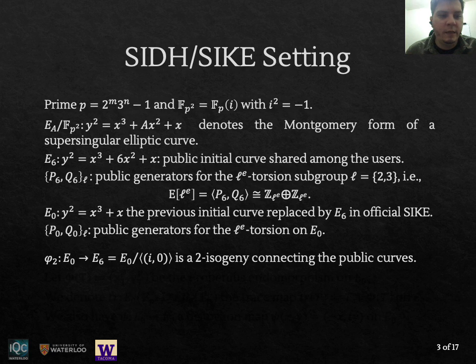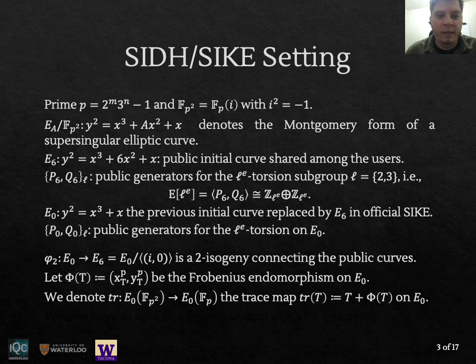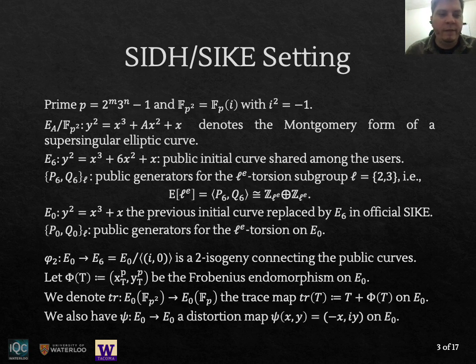We know that the curve E0 is connected to the curve E6 via a 2-isogeny, generated by the point (i, 0). And we also denote by capital Φ, the Frobenius endomorphism on E0. And by Tr, the trace map that takes points to the base field, and is defined by the sum of a point T to its Frobenius map. So we also have a distortion map available on the curve E0 that is usually hard to find on general elliptic curves, but in here we can make use of it.